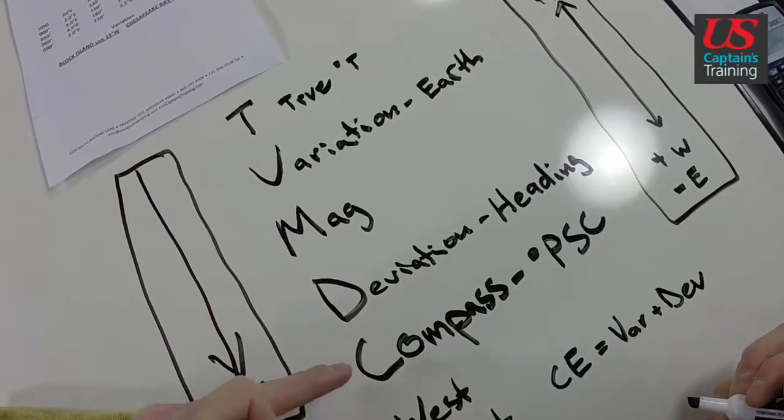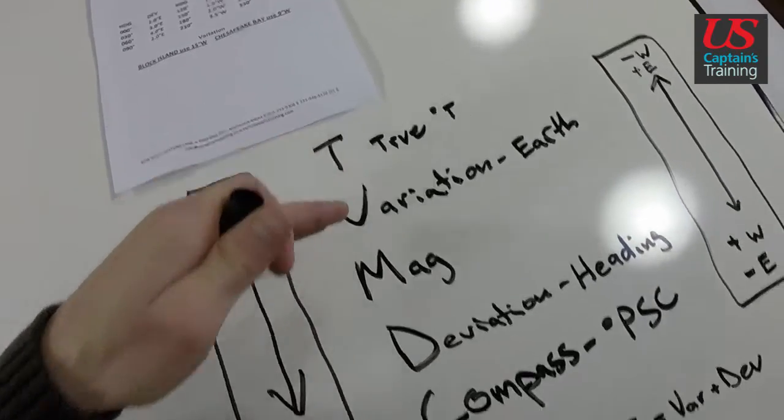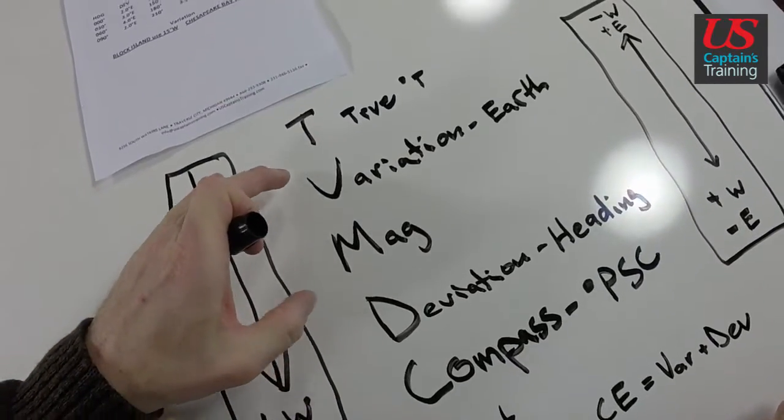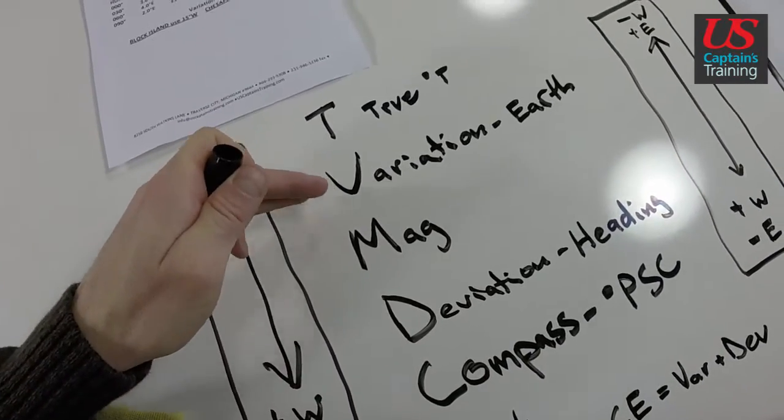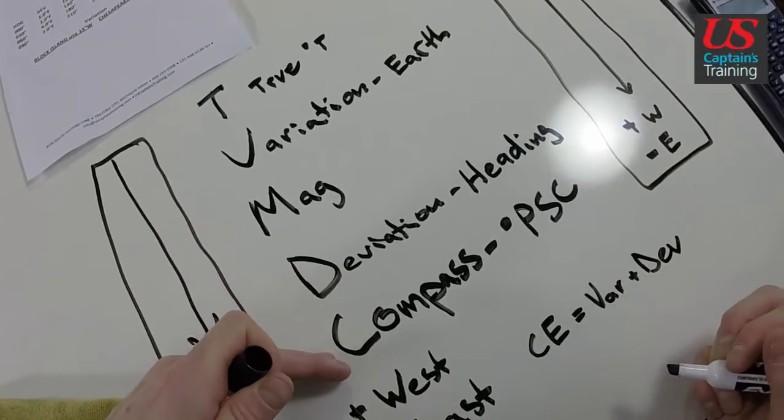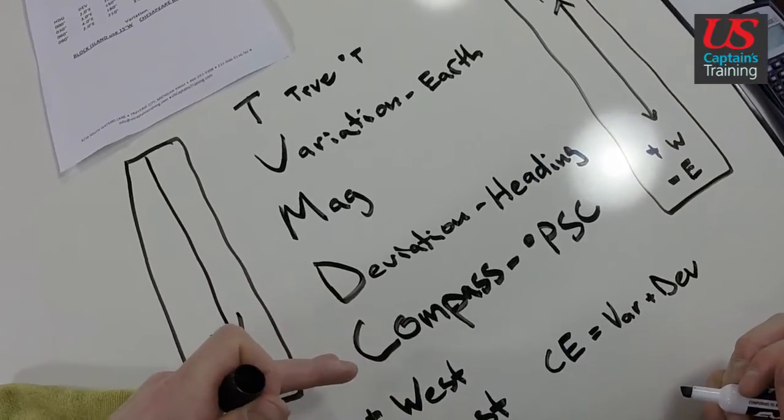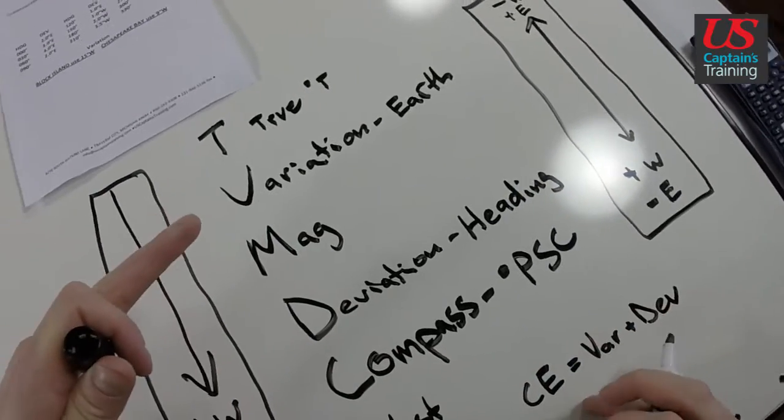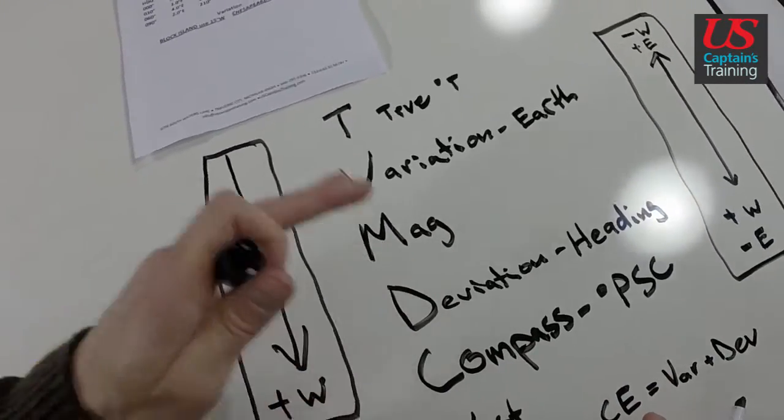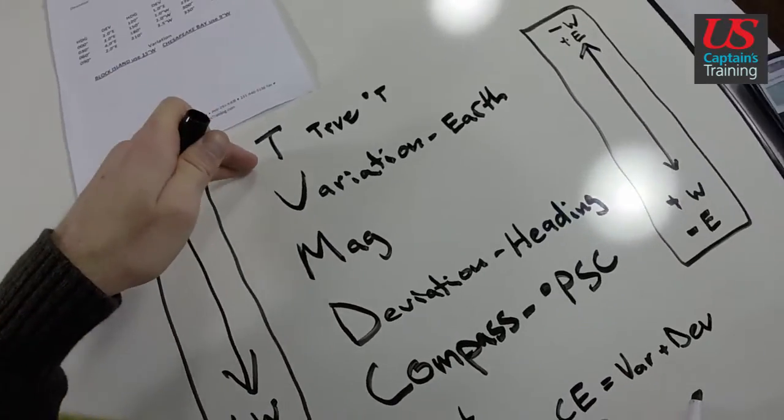So, if you want to go from true to compass, you put compass error in. You put variation in. You put deviation in. You get compass. If you want to go from compass to true, you take compass error out. You take deviation out. You take variation out. And you get back to true.